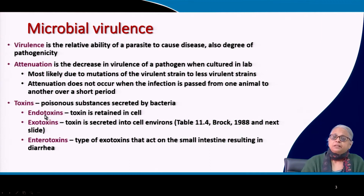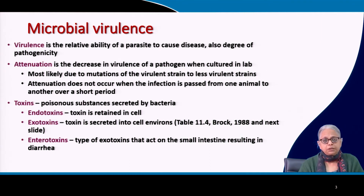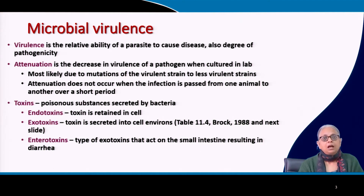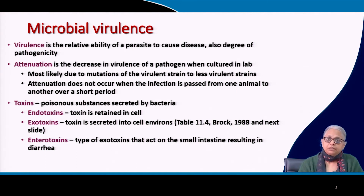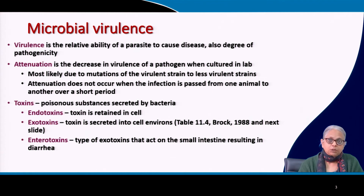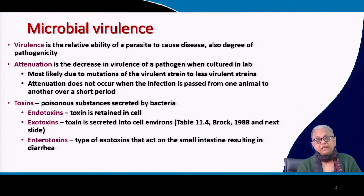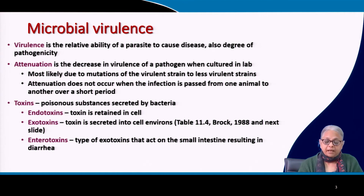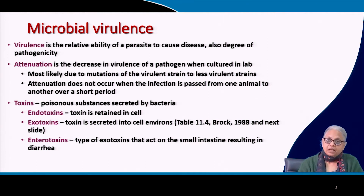Let us also take a look at another issue related to pathogenic organisms: toxins. These are poisonous substances that are secreted. These toxins can be associated with bacteria as well as algae. In one of the initial lectures, I mentioned red algae — it secretes a particular exotoxin which is a neurotoxin and has been responsible for the death of many people swimming in areas affected by red algae. These toxins can be poisonous substances secreted by bacteria, algae and many other microorganisms. There are two major groups: endotoxins and exotoxins.